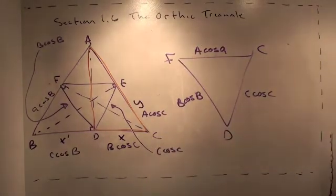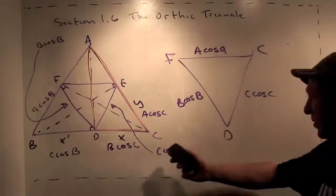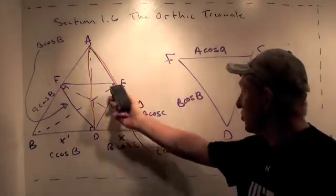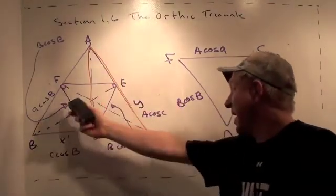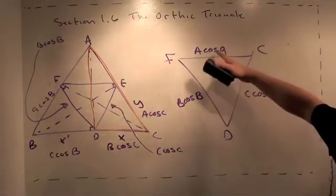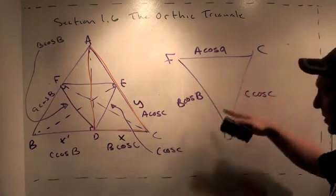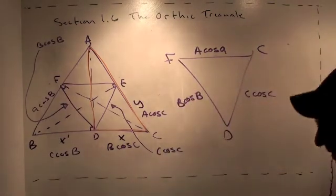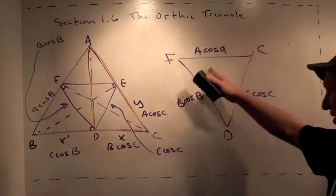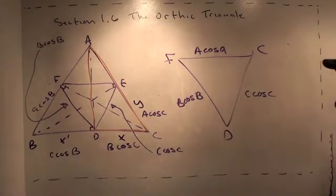Well, isn't that fascinating? The sides of the orthic triangle are shrunk from the side lengths of the big triangle by a factor of cosine of each one of the angles. Now, that means this triangle is not similar to the overall triangle, but it does tell you that the sides are actually very easy to calculate. So that's fact number one that you just stumble across as you're playing with the orthic triangle.